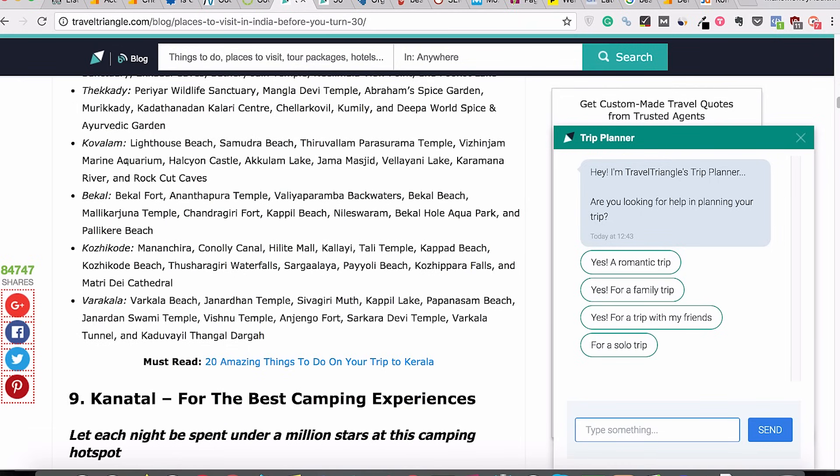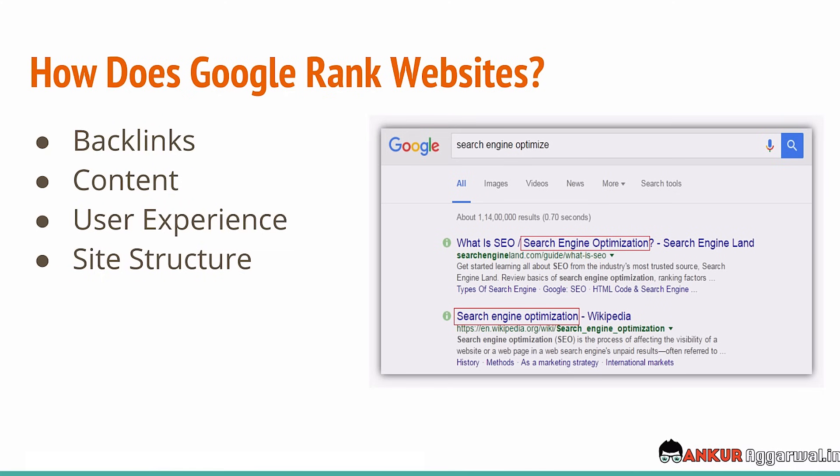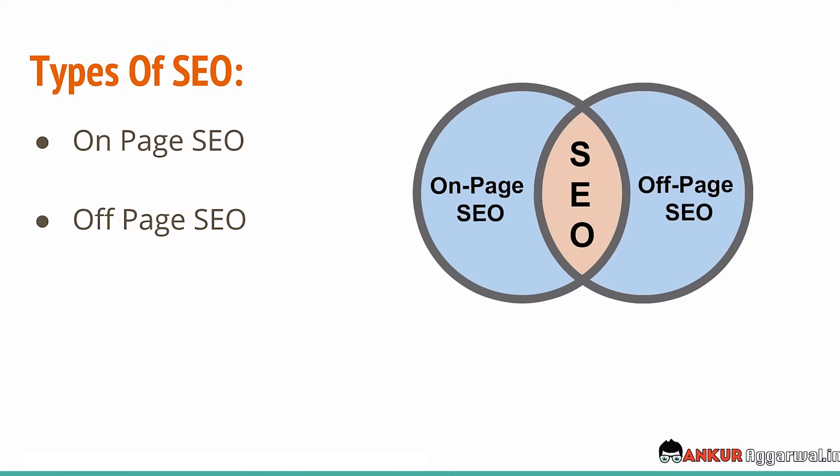When we talk about site structure, factors like speed of your website, the responsiveness of your website, and whether it is loading properly on mobile phone — these are the various factors that affect the ranking of your website. Now let's talk about types of SEO. There are primarily two types: on-page SEO and off-page SEO.